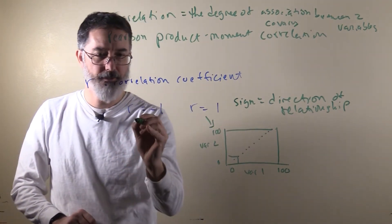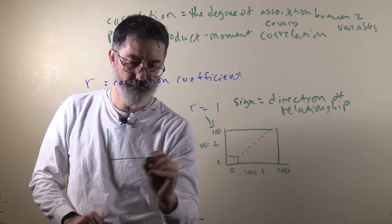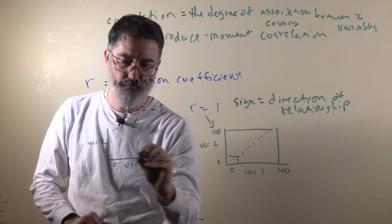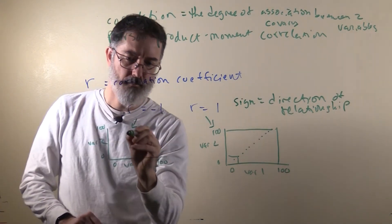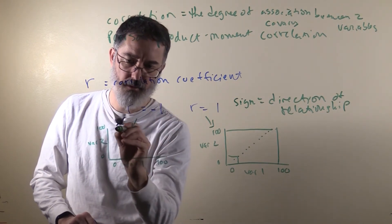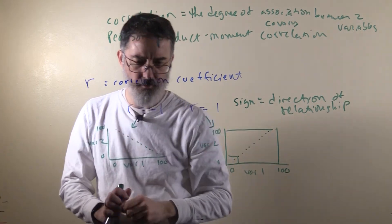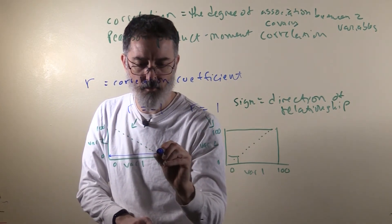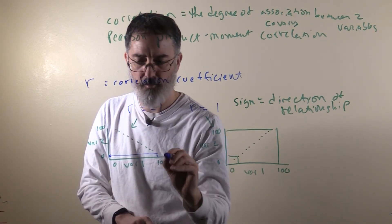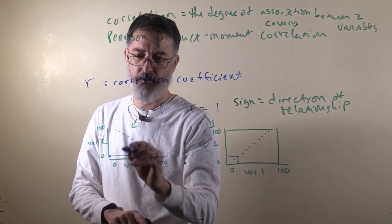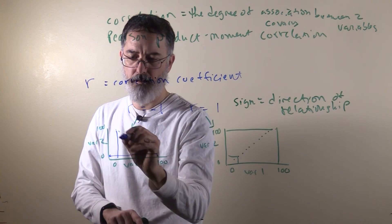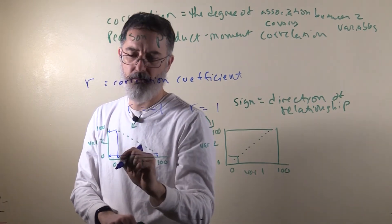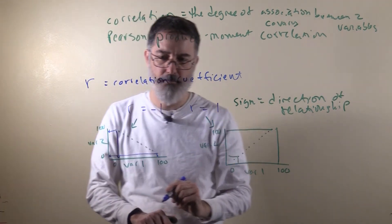For a negative correlation, we still have two variables. Here, I will draw it with a perfect negative correlation. Here, the way it works is people that are higher on one of the variables are low on the other. This is one person's score. That person had almost 100% on variable 1, but a very low score on variable 2. This person had a very low score on variable 1, something like maybe 10 or 5, and a very high score on variable 2, almost 100.